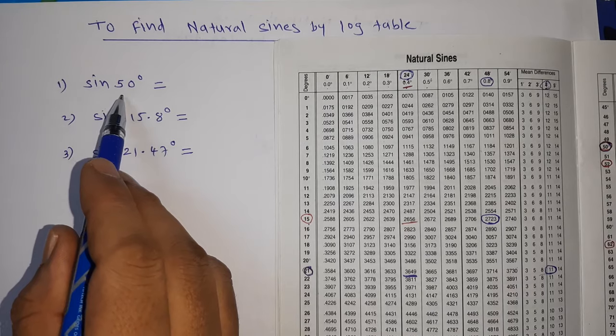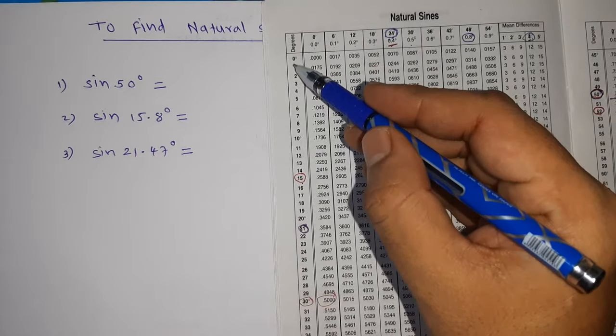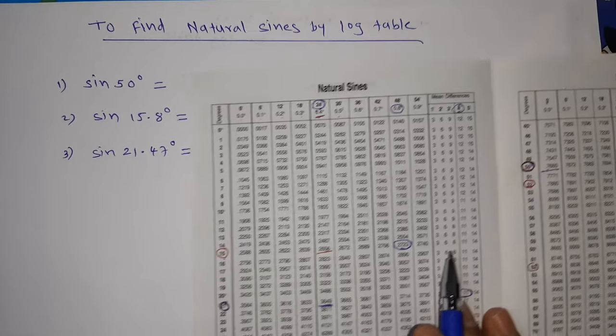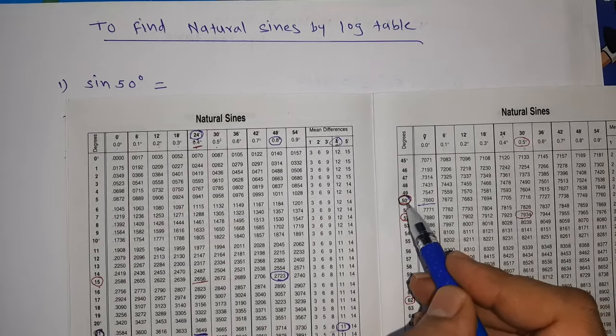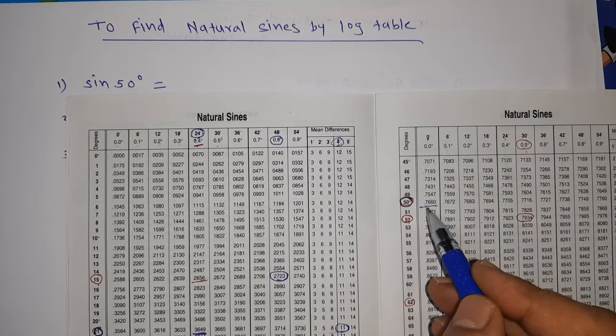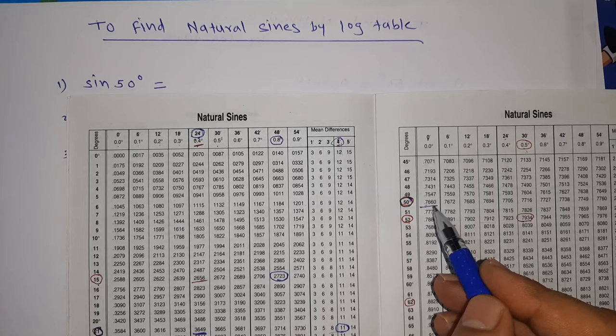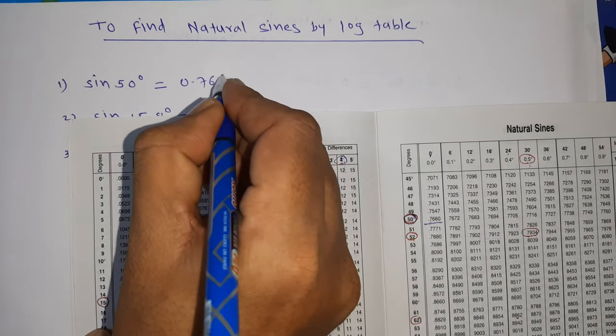Sine 50°, very simple. Just see in degrees, we'll go for 50°. So I am getting 50° here. I already did the marking. So only 50°. We will see in 50° 0, that is 7660. That means my answer is 0.7660.